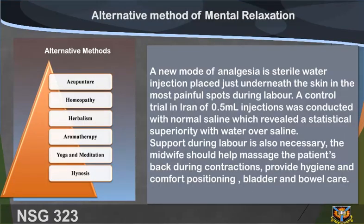Alternative methods of mental relaxation include acupuncture, homeopathy, herbalism, aromatherapy, yoga and meditation. A new mode of analgesia is sterile water injection placed just underneath the skin in the most painful spots during labor. A controlled trial using 0.5 mL injections was conducted with normal saline, which revealed statistical superiority of water over saline. Support during labor is also necessary.